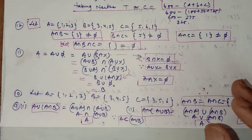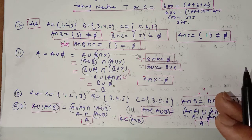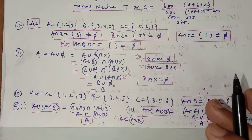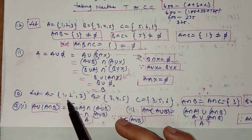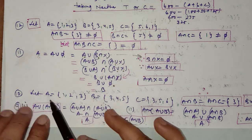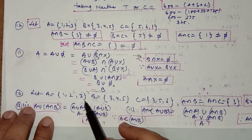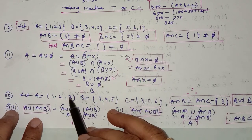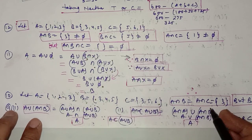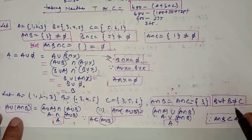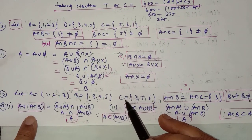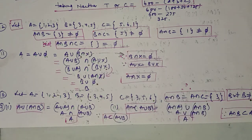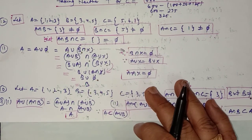In question number 10, show that A∩B = A∩C does not imply B = C. Since we need to prove something false, we use a counterexample. Let A = {1, 2, 3}, B = {3, 4, 5}, C = {3, 5, 6}. Then A∩B = {3} and A∩C = {3}, so A∩B = A∩C, but B ≠ C. Remember: to prove something false, use a counterexample; to prove something true, prove it theoretically.